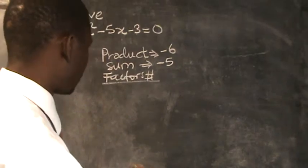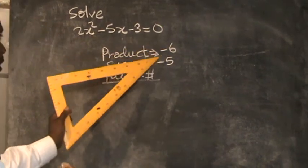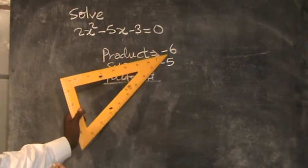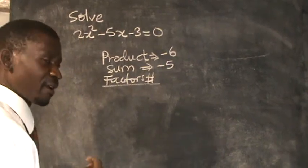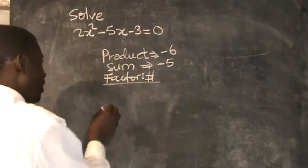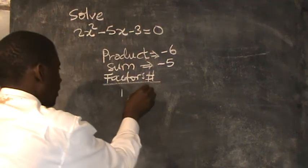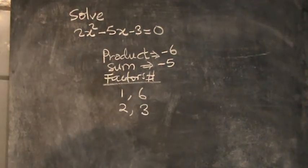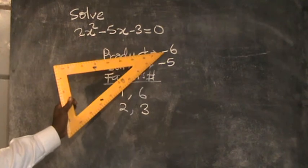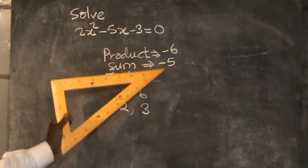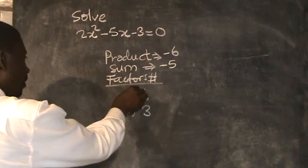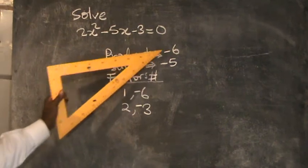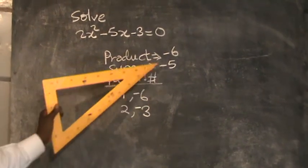In the same manner, when you look at the product, it is negative 6, and the sum is negative 5. To raise the factors of negative 6, first raise the factors of positive 6: these are 1 multiplied by 6, and 2 multiplied by 3. But since this 6 is negative, make the bigger numbers negative — so 1 multiplied by negative 6 gives negative 6, and 2 multiplied by negative 3 also gives negative 6.